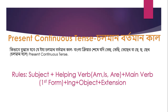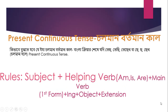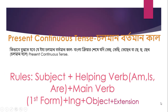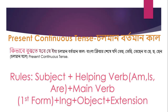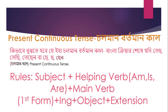So let's start. To understand Choloman Bartman Kaal: in Bangla, if a verb ending suggests ongoing action (Choloman Bartman Kaal), that indicates Present Continuous Tense. The rules are easy. First: Subject (Karta) + Helping Verb (Auxiliary Verb).